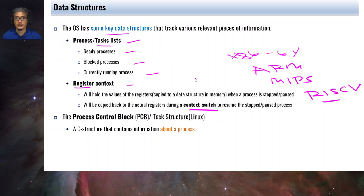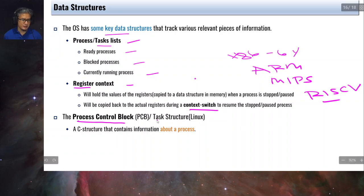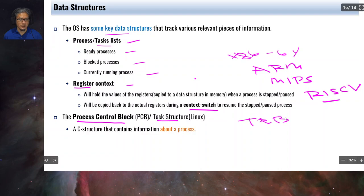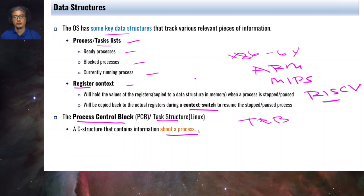The structure used to describe a process is classically referred to as the Process Control Block (PCB), or in Linux it's called the task structure. In Windows we have a thread execution block. This is a C structure that describes the information about a particular process. If you're writing an operating system kernel, you need to define a structure that characterizes a process.